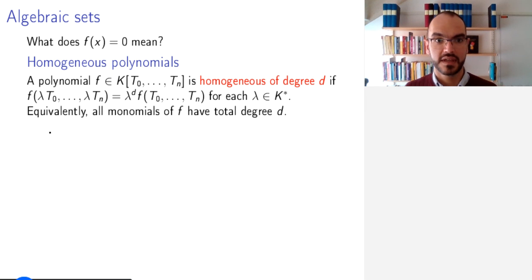In our example, where f(t_1, t_2) was equal to t_1^2 - t_2, this wasn't the case because this monomial had degree 2 and this monomial had degree 1. We could fix it maybe by writing this way. Now both monomials have total degree 2. Remember, the total degree of a monomial is the sum of the degrees of each variable. Such a polynomial is called homogeneous of degree d.